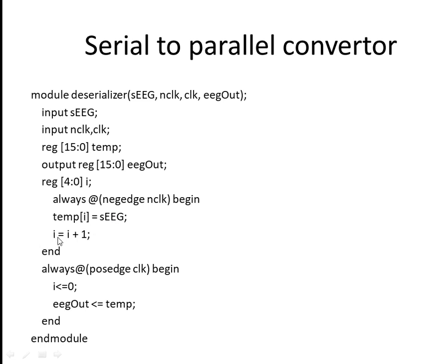Increment I equal to I plus one, because first it will write in the first location, then second, third — so you have to increment. This is loaded on the negative edge of the clock. We take out the final output — if I is less than or equal to zero, whatever is in temp is loaded into temp[I] and brought to output. So SEG out will be parallel — the serial input is converted into parallel.